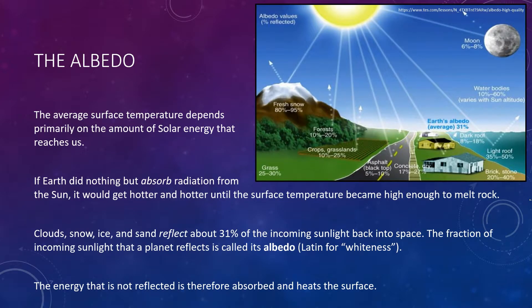Very little heat comes from inside our planet, so the average surface temperature of Earth depends almost entirely on the amount of energy that reaches us from the Sun. If Earth did nothing but absorb radiation from the Sun, it would continually get hotter until the surface temperatures became hot enough to melt rock. Thankfully, this does not happen. One reason is that clouds, snow, ice, and sand reflect about 31% of the incoming sunlight back into space. The fraction of incoming sunlight that a planet reflects is known as its albedo, which is a Latin term for whiteness.